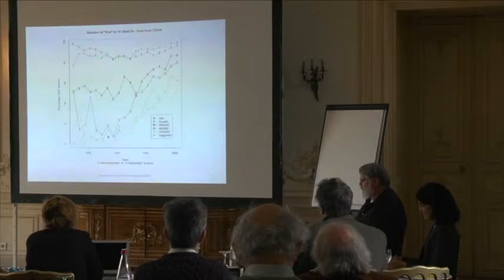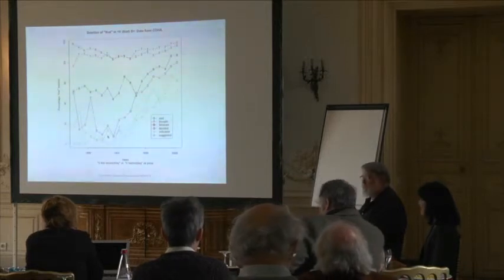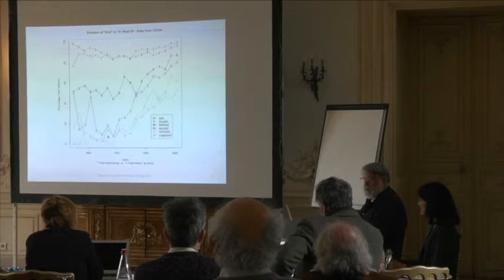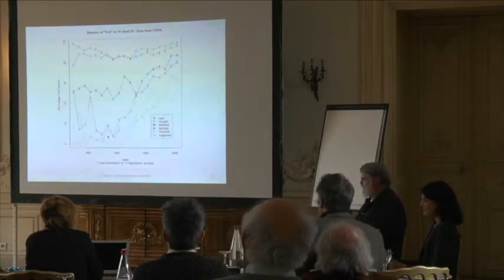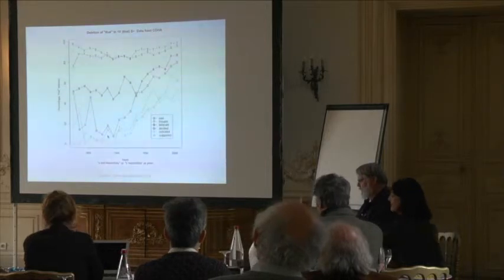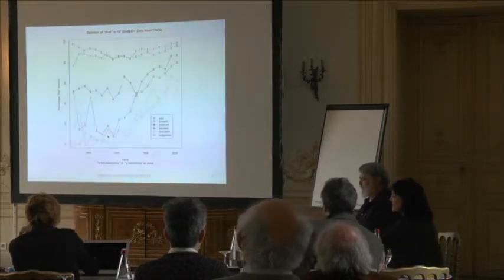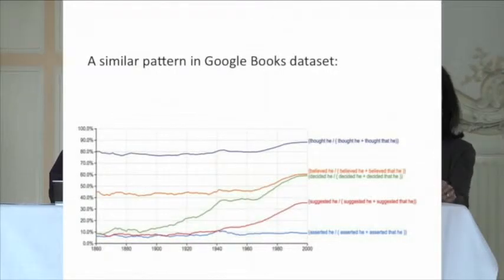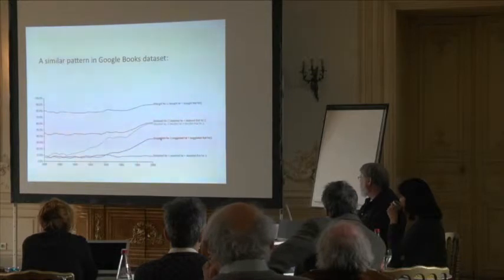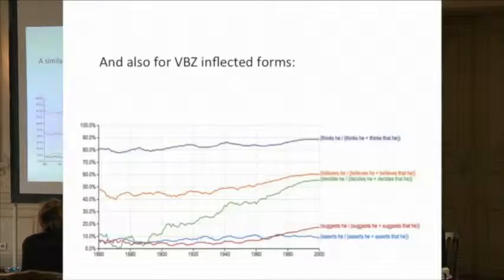This data is from the Corpus of Historical American English, which is about 40 million words per decade from 1820 onward, selected by Mark Davies at Brigham Young University. We can see a similar pattern in the Google Books dataset: 'thought' has had a high percentage for a long time, 'asserted' remains very low, 'suggested' is in between, and so on — including for inflected forms.